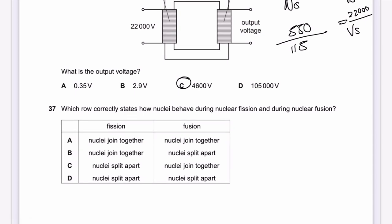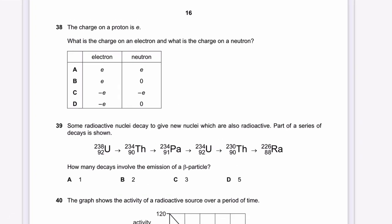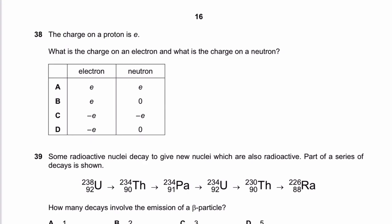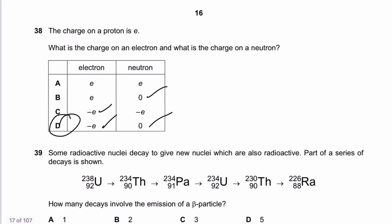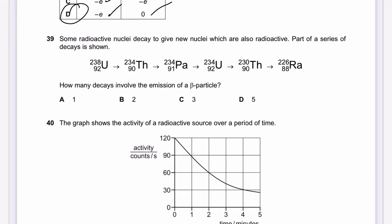Question 37: How do nuclei behave during nuclear fission and fusion? Fusion — nuclei join together. Fission — nuclei split apart. The answer is C. Question 38: The charge on a proton is +e. An electron has charge −e. A neutron has zero charge. The answer for question 38 is D.